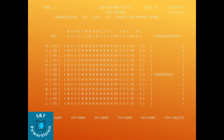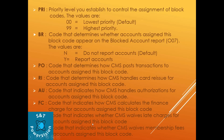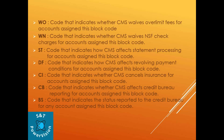After SC, we have WAV fields: WL means waive late charge, WAV means waive membership fee, another WAV means waive over limit fee, and WN means waive NSF. These codes determine whether CMS waives the late charge, membership fee, over limit fee, or NSF charges for the account assigned this block code. HT is the code that indicates how CMS affects statement processing for the account assigned this block code.